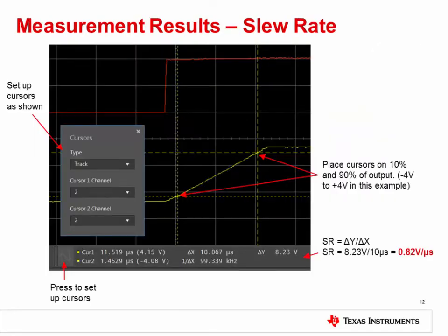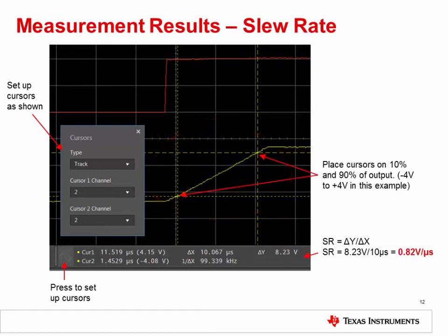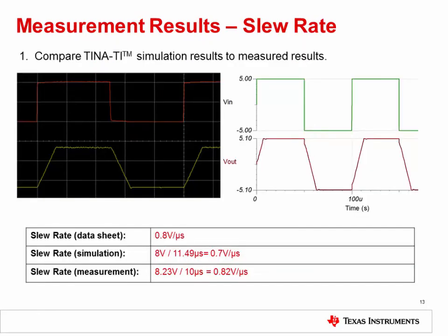Let's now determine the measured slew rate. Enable cursors, set them up as shown, then place the cursors on 10% and 90% of the output signal. Take note of the time and voltage difference and then calculate the slew rate using the equation given. In this example, a slew rate of 0.82 volts per microsecond was measured. You may have slightly different results in your experiment. Compare the oscilloscope display of the VirtualBench to the simulation results from TINA-TI. Also compare the slew rate values from the datasheet, simulation, and measurement — they should all be similar, although you may get slightly different results.